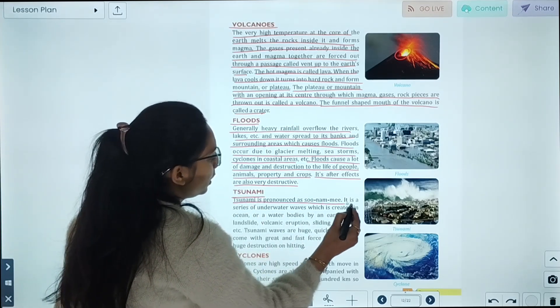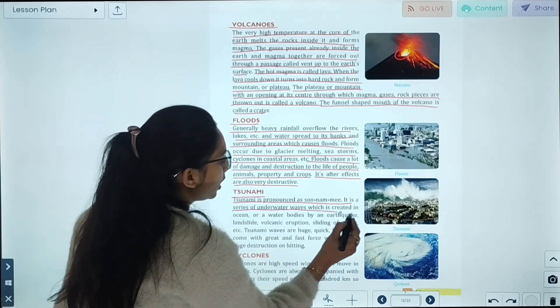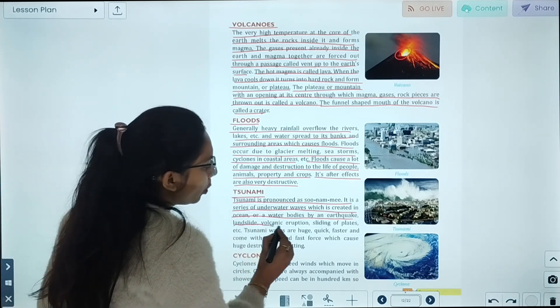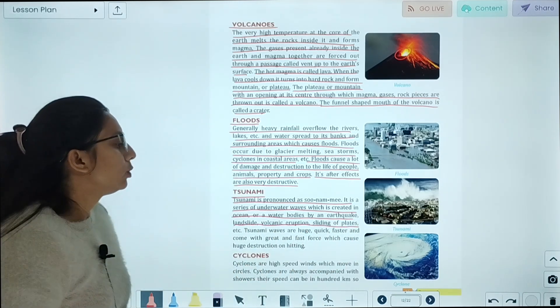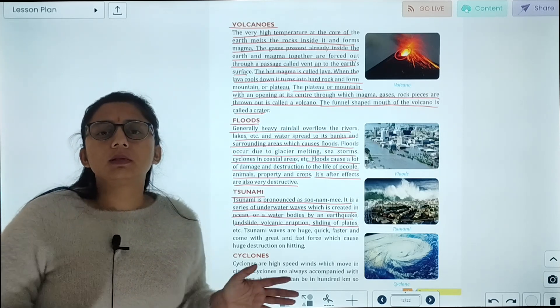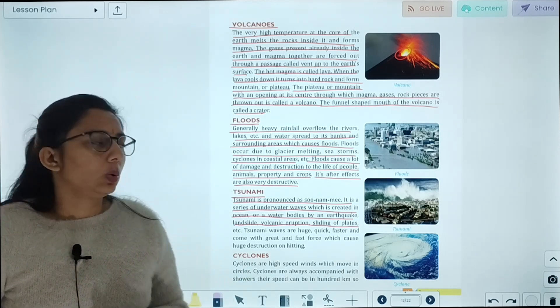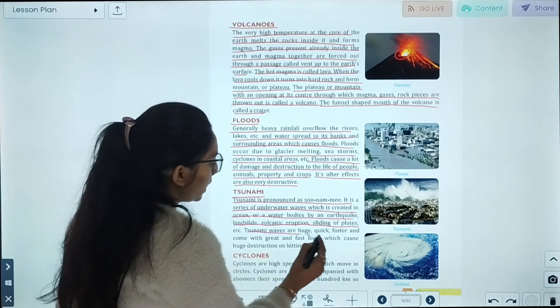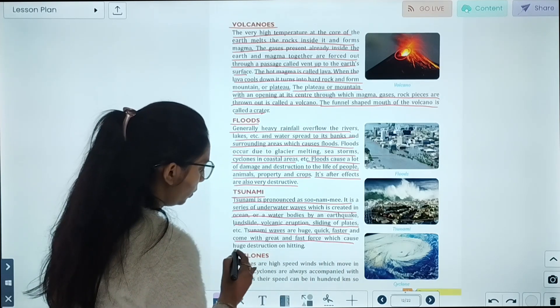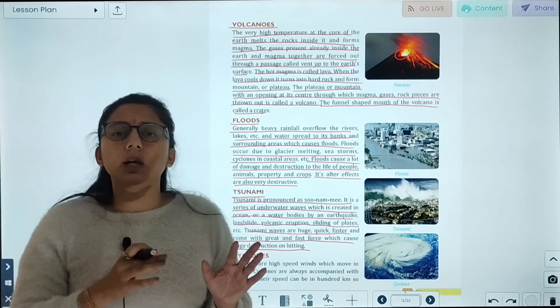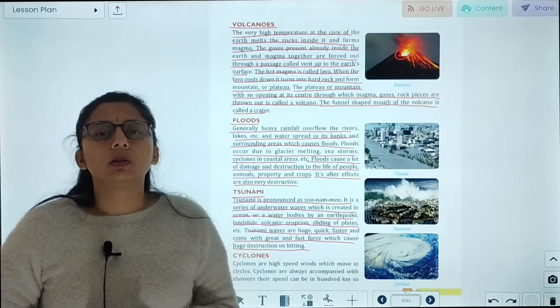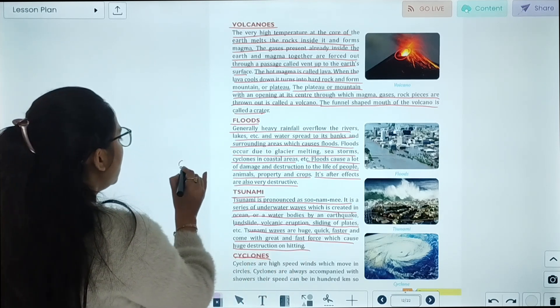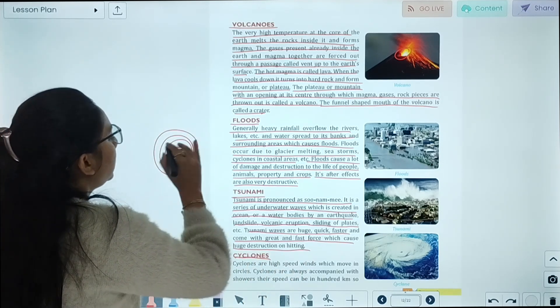Tsunami is a series of underwater waves which is created in the ocean or water bodies by an earthquake, landslide, volcanic eruption, or sliding off of lands. Tsunami waves are quick, faster, and come with great force, which causes huge destruction on hitting the coast.